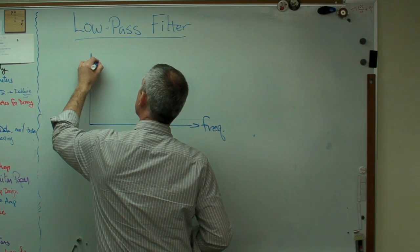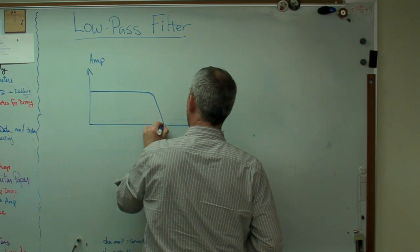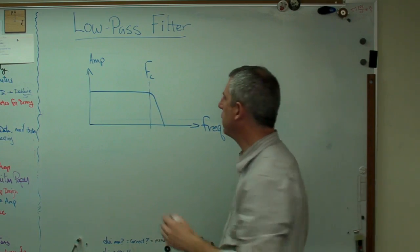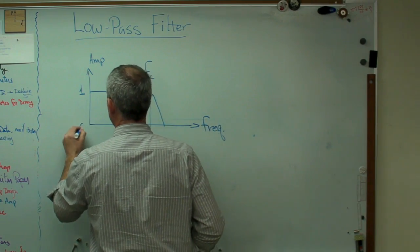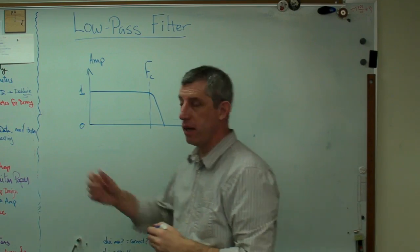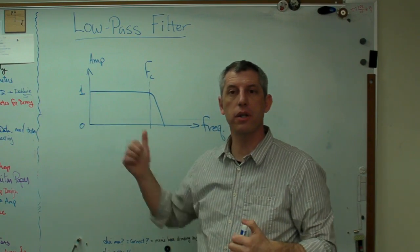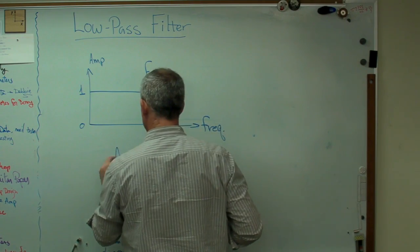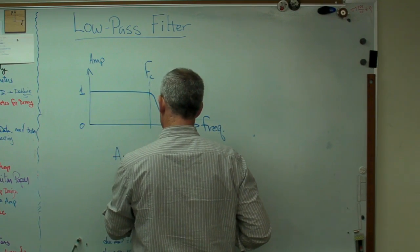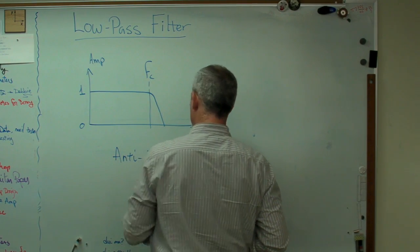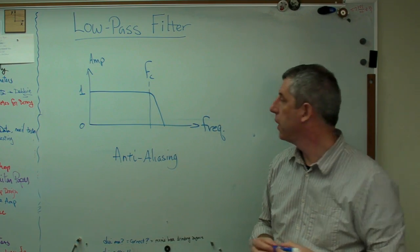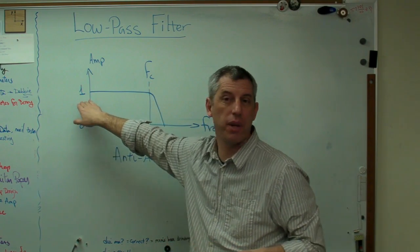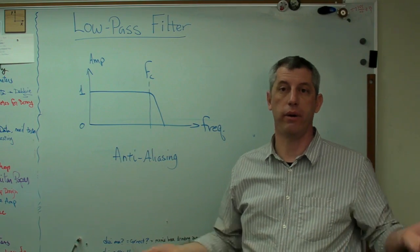And here's what an anti-aliasing filter looks like in frequency domain. There's frequency and amplitude. And it goes up to there and then it drops off, with that right there being what's called the corner frequency, FC. That's 1 and that's 0. So what happens is data comes into the data acquisition system and the first thing it hits is this low-pass filter, this anti-aliasing filter. Everything below the corner frequency goes through unchanged because it gets multiplied by 1. If I multiply anything by 1, I don't change it.